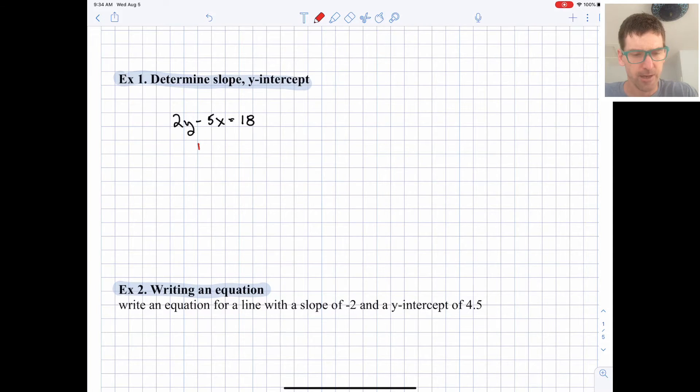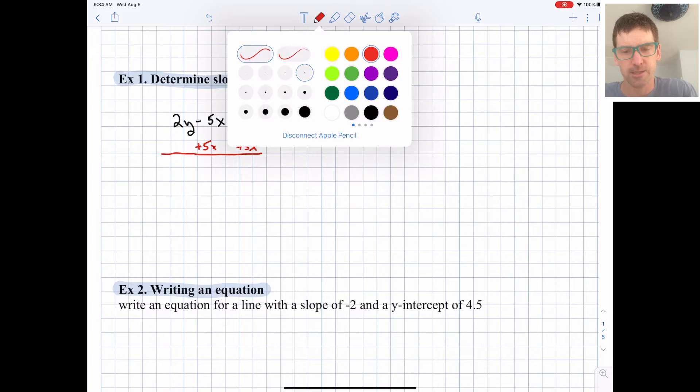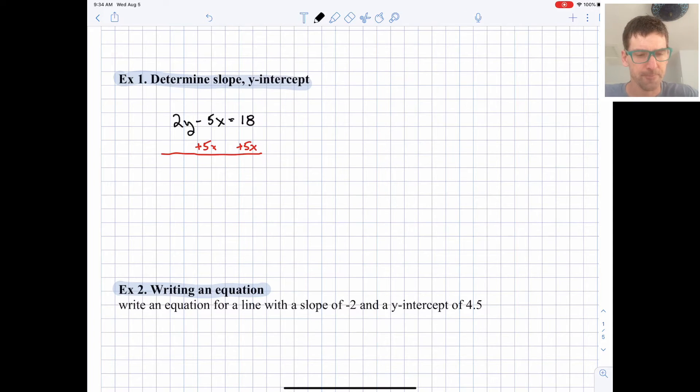So I'm going to add 5x to both sides to work towards getting all the y's and only the y's on the left. So these 5x's cancel and we have 2y equals 5x plus 18. And then we can divide both sides by 2.